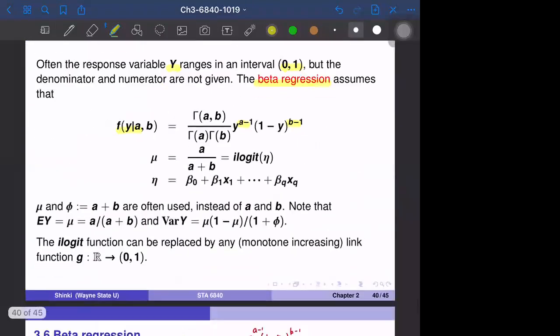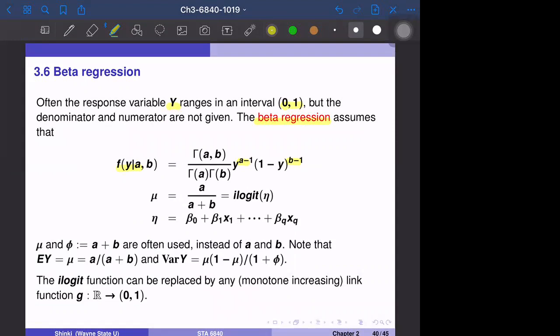y is assumed to have the beta distribution with parameters a and b. Here μ is assumed to be the inverse logit function of η, so that's e^η over 1 plus e^η. And η is the linear function of predictors. Here μ is a over a plus b, and we define φ as a plus b. Then we use μ and φ usually instead of a and b. So the parameterization is a little complicated, but basically μ and φ represents everything about a and b. Only two parameters: μ is the mean parameter and η is the transformed version.